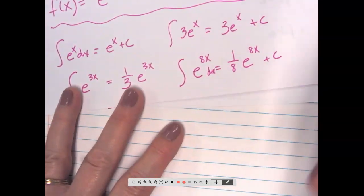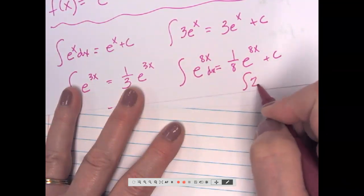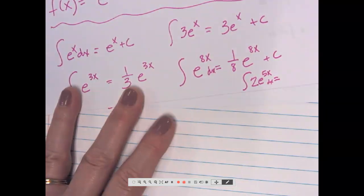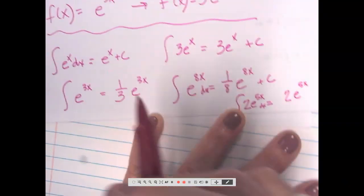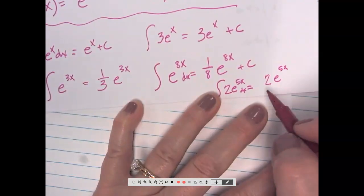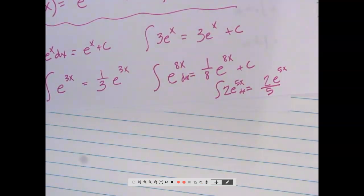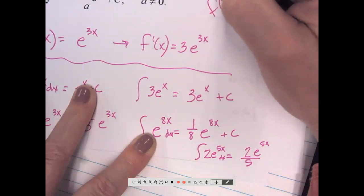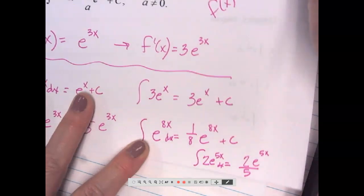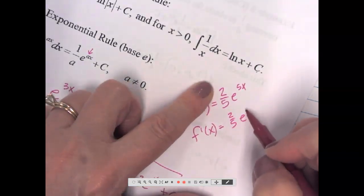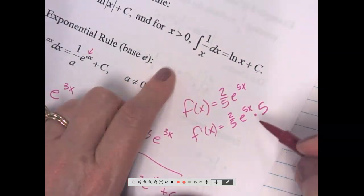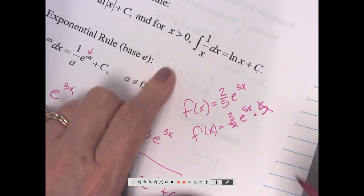What if I had the antiderivative of 2e to the 5x? I'm going to have 2e to the 5x but then I have to do that 1 over 5, so it ends up being 2/5 e to the 5x. Let's verify: take the derivative of 2/5 e to the 5x — that's 2/5 times e to the 5x times 5, and 5 and 1/5 cancel — giving 2e to the 5x. Correct.